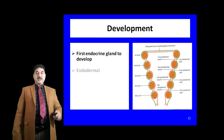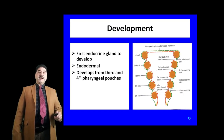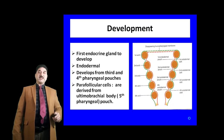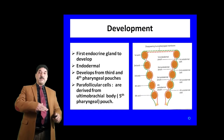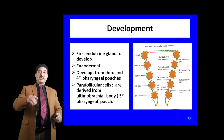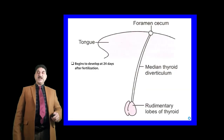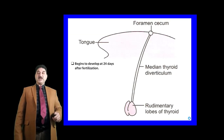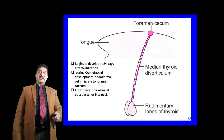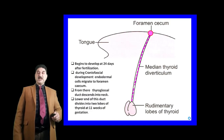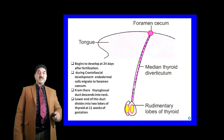The thyroid gland is the first endocrine gland to develop; it is endodermal in origin and develops from the third and fourth pharyngeal pouches. Parafollicular cells are derived from the ultimobranchial body, which is the fifth pharyngeal pouch — no other structure of the thyroid gland is derived from it. Thyroid begins to develop at 24 days after fertilization. Endodermal cells migrate to form the foramen cecum, from where the thyroglossal duct descends into the neck. The caudal end of the thyroglossal duct divides into the two lobes at 11 weeks of gestation.